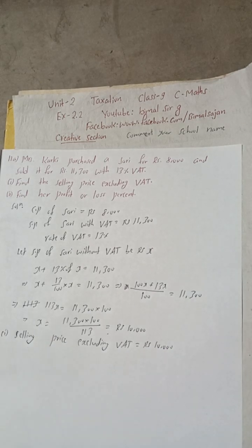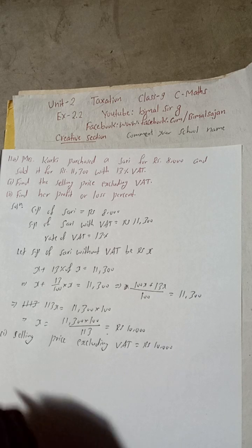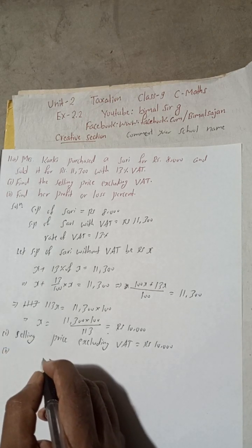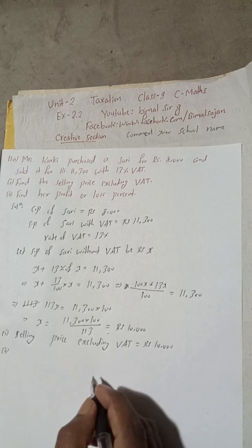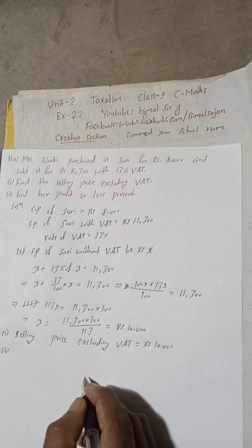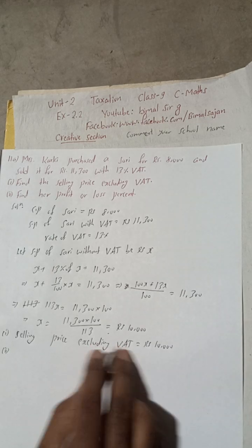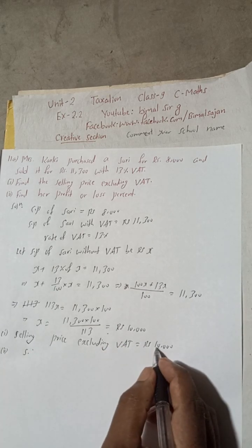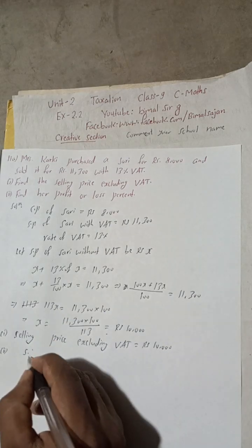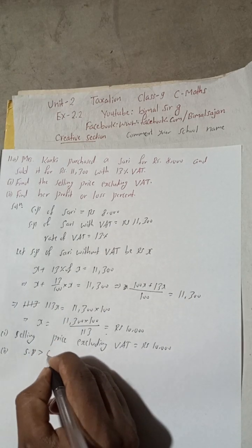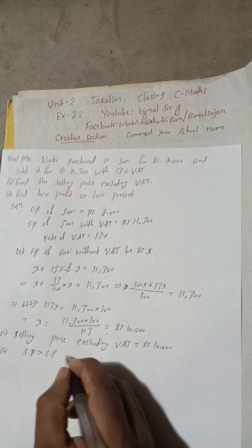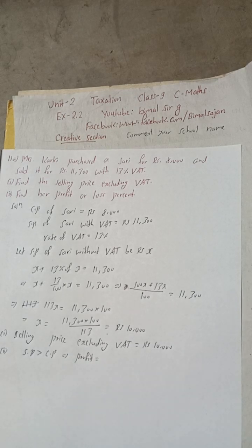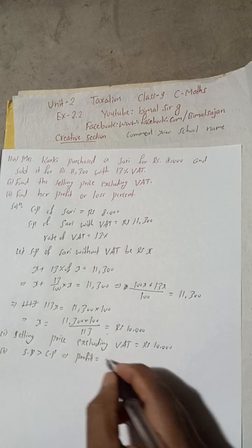Now number two, find her profit or loss. So for number two profit/loss, we can now compare selling price without VAT. So we can now compare that SP is 10,000 and cost price was 8,000. So SP is greater than CP. This implies profit. Profit is equal to SP minus CP.